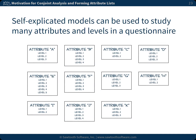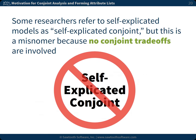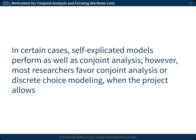Self-explicated models can be used to study many attributes and levels in a questionnaire. Some researchers refer to self-explicated models as self-explicated conjoint, but this is a misnomer because no conjoint trade-offs are involved. A challenge with self-explicated models is that respondents typically have a difficult time using stated questions to provide reliable measurements of attribute importance and with enough discrimination between most and least important attributes. In certain cases, self-explicated models perform as well as conjoint analysis. However, most researchers favor conjoint analysis or discrete-choice modeling when the project allows.